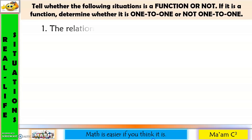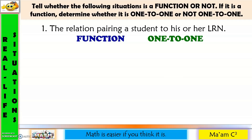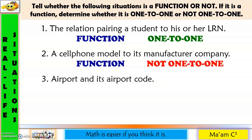Now, let us have real-life situations. Number 1: the relation pairing a student to his or her LRN. Since each student is unique, this is a function. No two students have the same LRN, and no two LRNs belong to a single student. So this is actually a one-to-one correspondence, because each student has a particular LRN. Another one: a cell phone model to its manufacturer company. For example, F3 and F11-2 and A9 are all models from Oppo. So there could be many different models to one particular manufacturing company — that is a many-to-one correspondence. Many-to-one is a function, but therefore this is not one-to-one. Another one: airport and its airport code. Each airport has a particular code. So this is a function and it is one-to-one.